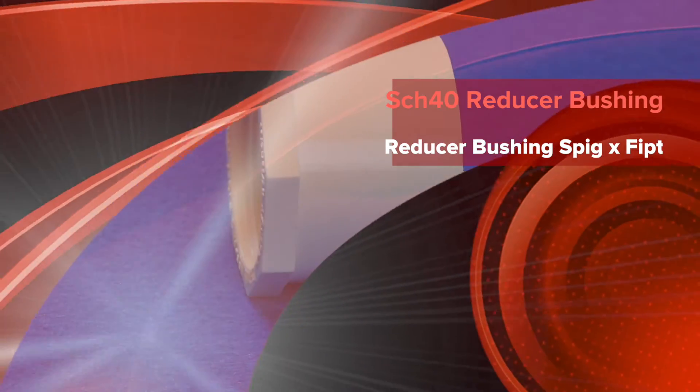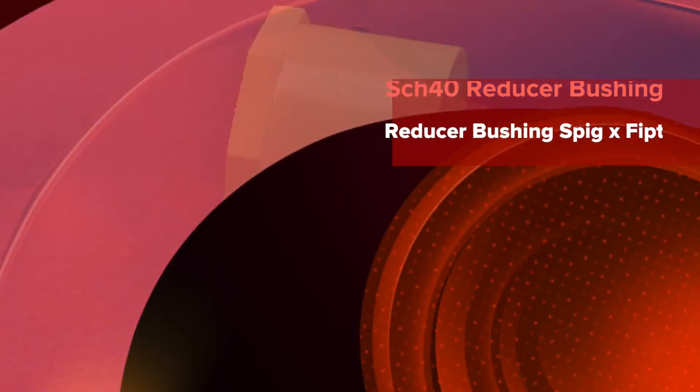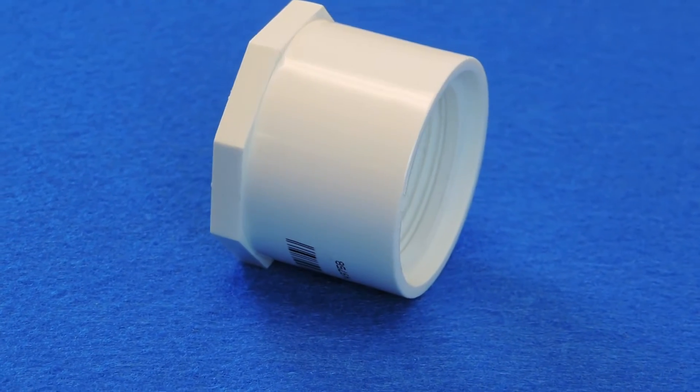This is a Schedule 40 SPIG by FIP reducer bushing. Reducer bushings can fit your needs when your project requires the connection of pipes of two different diameters.